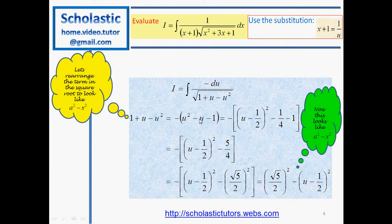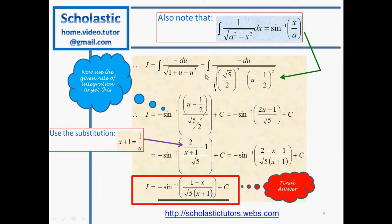We complete the square: (u minus 1/2) squared gives u squared minus u plus 1/4. So we write u squared minus u minus 1 as (u minus 1/2) squared minus 1/4 minus 1, which equals (u minus 1/2) squared minus 5/4. Taking the negative sign out, the expression inside the square root becomes 5/4 minus (u minus 1/2) squared, or (√5/2) squared minus (u minus 1/2) squared — now matching the a squared minus x squared form.